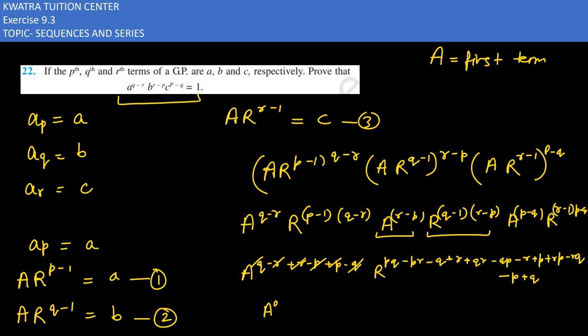Now you have a to the power 0, r to the power, we'll check if it's 0 or not. So here minus q and plus q cancel. Plus p and minus p cancel. Minus qp and plus qp cancel. Minus pr and plus pr cancel.